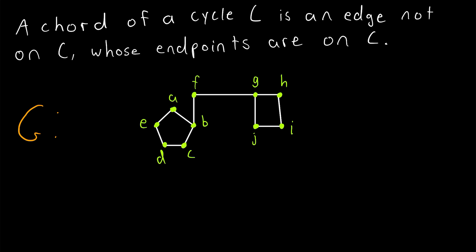Well, it has to be an edge that's not on the cycle whose endpoints are on the cycle. For example, if we join E and B with an edge, this is an edge that's not on the cycle, but its endpoints are on the cycle.